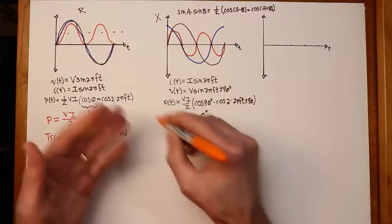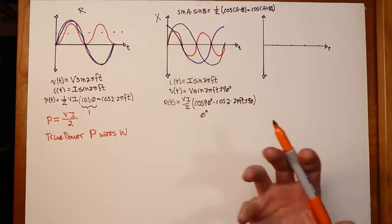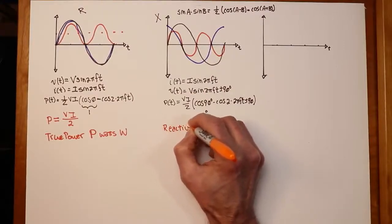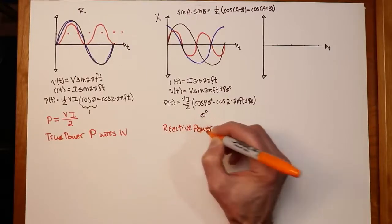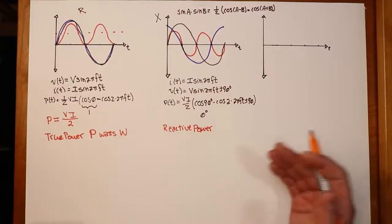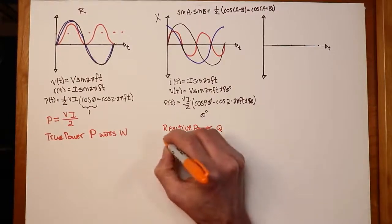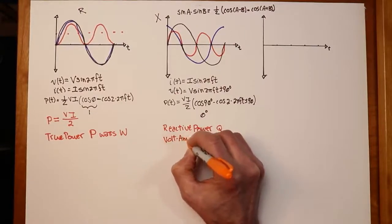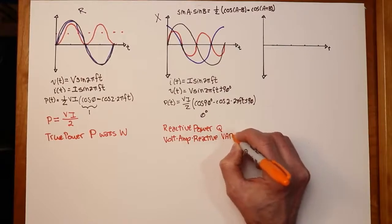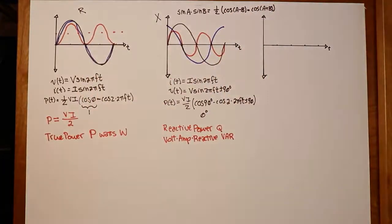We still come up with a number — VI/2 — but we call this reactive power. Just like impedance has an imaginary component, this is an imaginary sort of power. We give it the symbol Q, and its units are volt-amps reactive, abbreviated VAR.